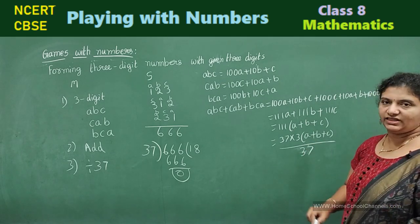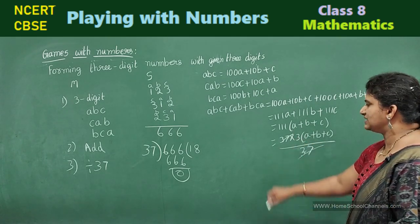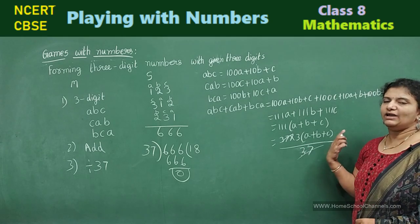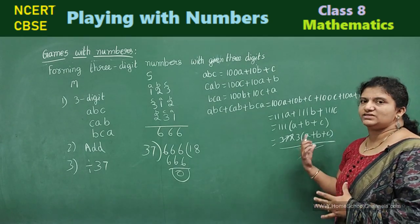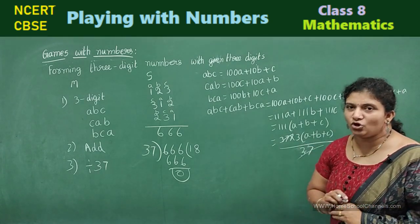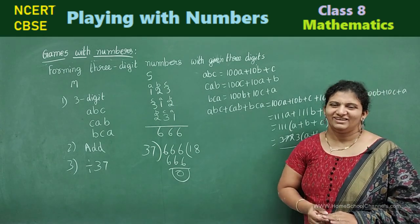Now, when you divide the sum with 37, what happens? 37, 37 cancel. And what the value you are left with is a quotient. And there is no remainder.